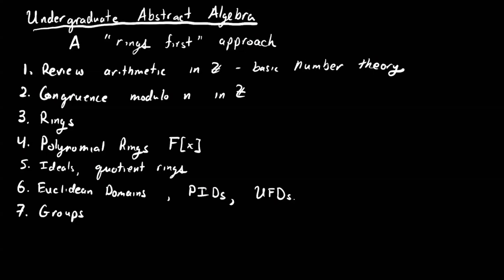And then we'll talk about subgroups, homomorphisms and isomorphisms, normal subgroups, and quotient groups. So these will be notions that are kind of analogous to things that we found for rings.